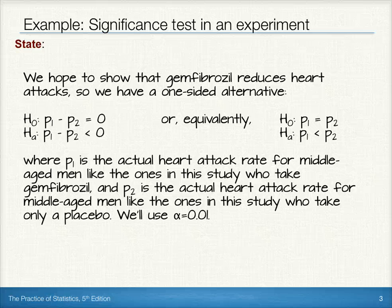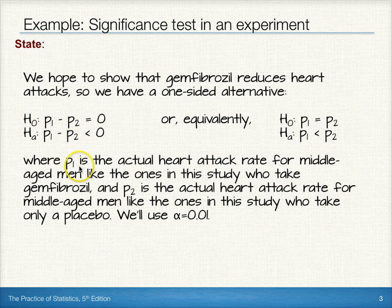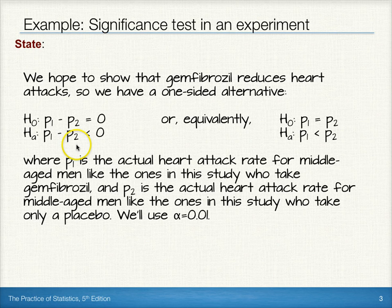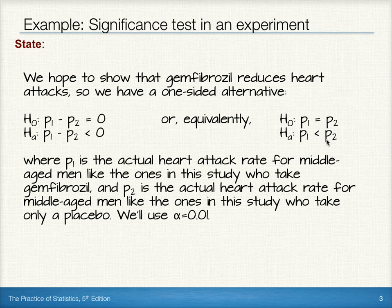We can write these hypotheses two different ways — either as statements with the differences in proportions, or a more straightforward approach just comparing the proportions. In either case, our null hypothesis is a statement of equality: either the difference between proportions will be 0, or we can write it as P1 equals P2. For the alternative, it's one-sided, so we want to show that the difference will be less than 0, or that one proportion is less than the other.